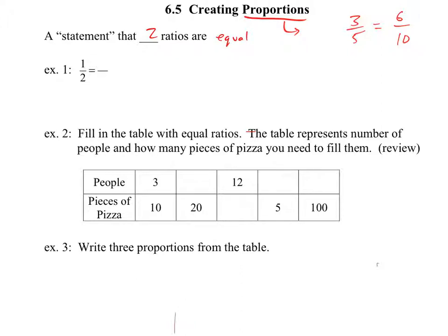And that's really what we've been doing this whole chapter. We've been taking something like 3 fifths, and I could take and multiply the 3 by 2, that gets me the 6. I could multiply the 5 by 2, that gets me 10. And 6 tenths should be equal to 3 fifths, because when you multiply by 2 over 2, you're really just multiplying by 1.